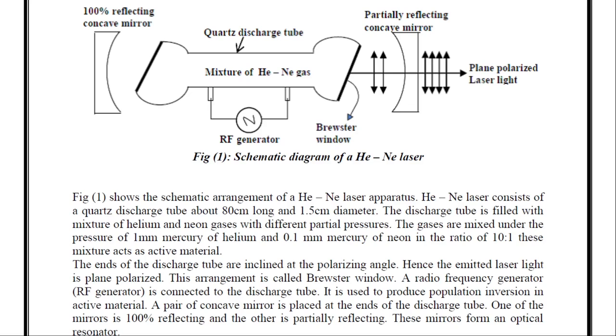A radio frequency generator or RF generator is connected to the discharge tube. It is used to produce population inversion in active material. A pair of concave mirrors is placed at the ends of discharge tube. One of the mirrors is 100% reflecting concave mirror and the other is partially reflecting mirror. These mirrors form an optical resonator. These two mirrors combine to form an optical resonator.